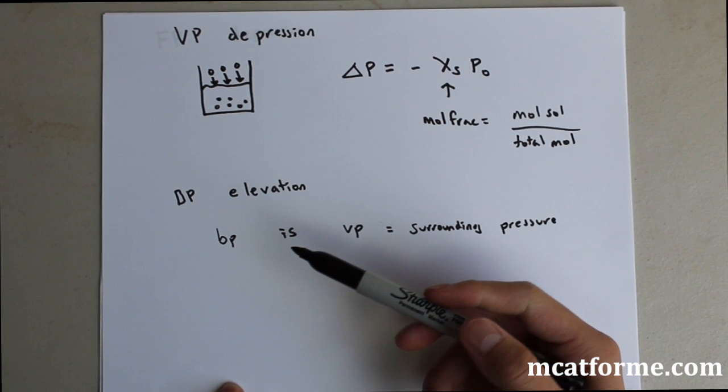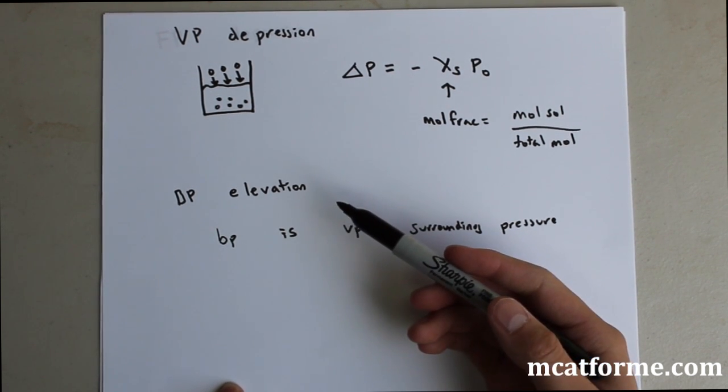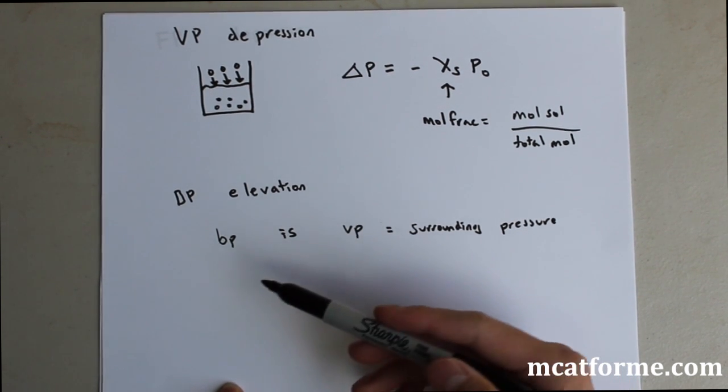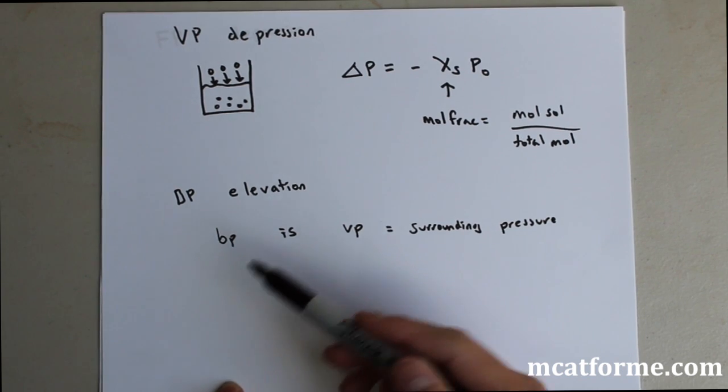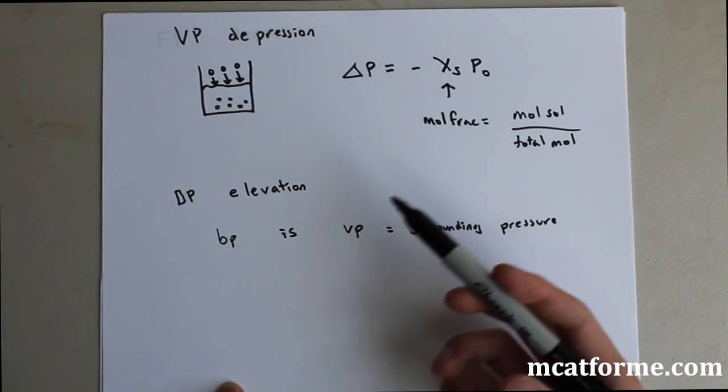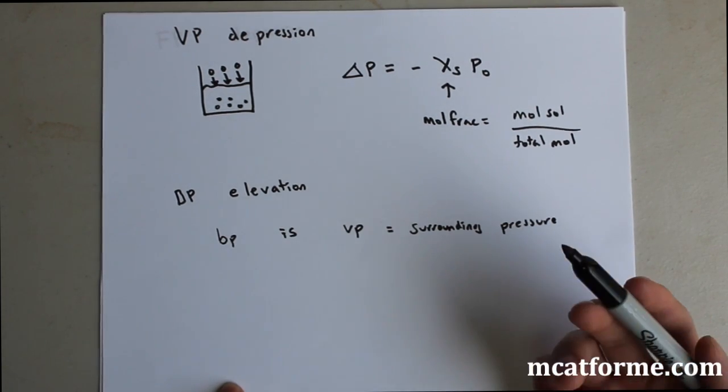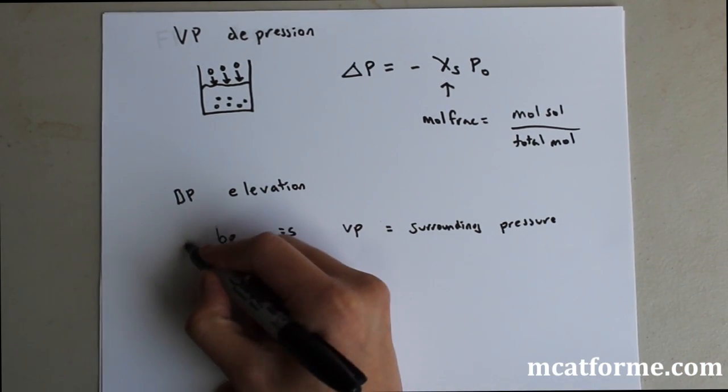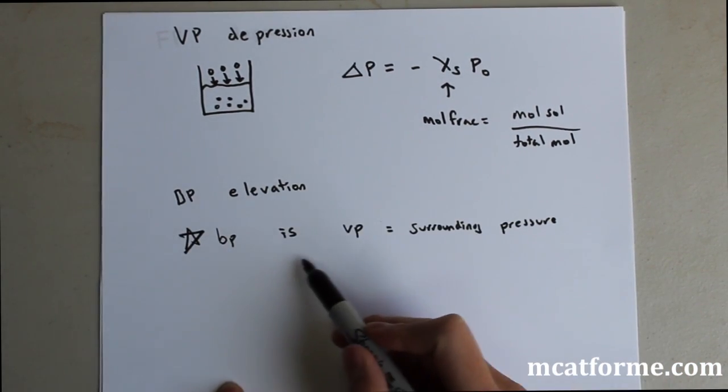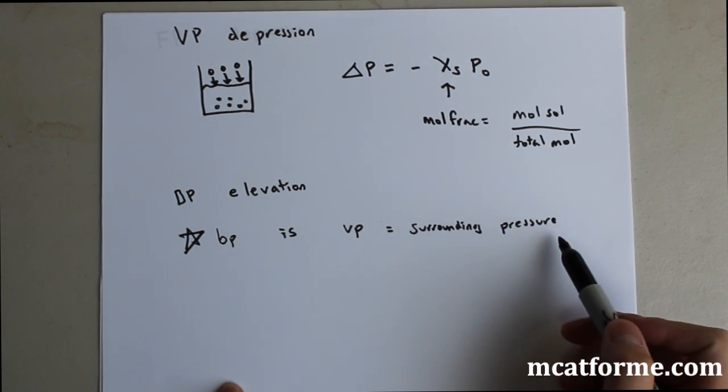Now on to boiling point elevation. Before we actually talk about the equation, we need to define what boiling point is. A lot of us know this just by when we see water boil when we're cooking, but what exactly does that mean? This is a very important property.